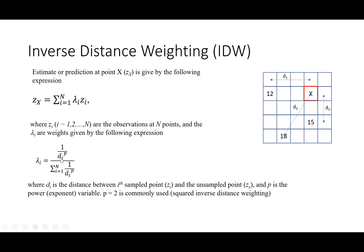To calculate the weight, you need to know the distance from x to each observation. With three points, the distance from x to the point with value 12 is d1, to the point with value 18 is d3, and to the point with value 15 is d2. Once you know the distances, you use the weight expression, which also requires the power parameter p. If you use p equal to 1, that is the simplest form — the actual inverse distance weighting approach.